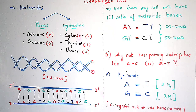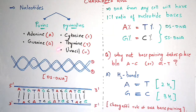Pyrimidines consist of cytosine, thymine, and uracil. Adenine is denoted with A, guanine with G, cytosine as C, thymine as T, and uracil as U.